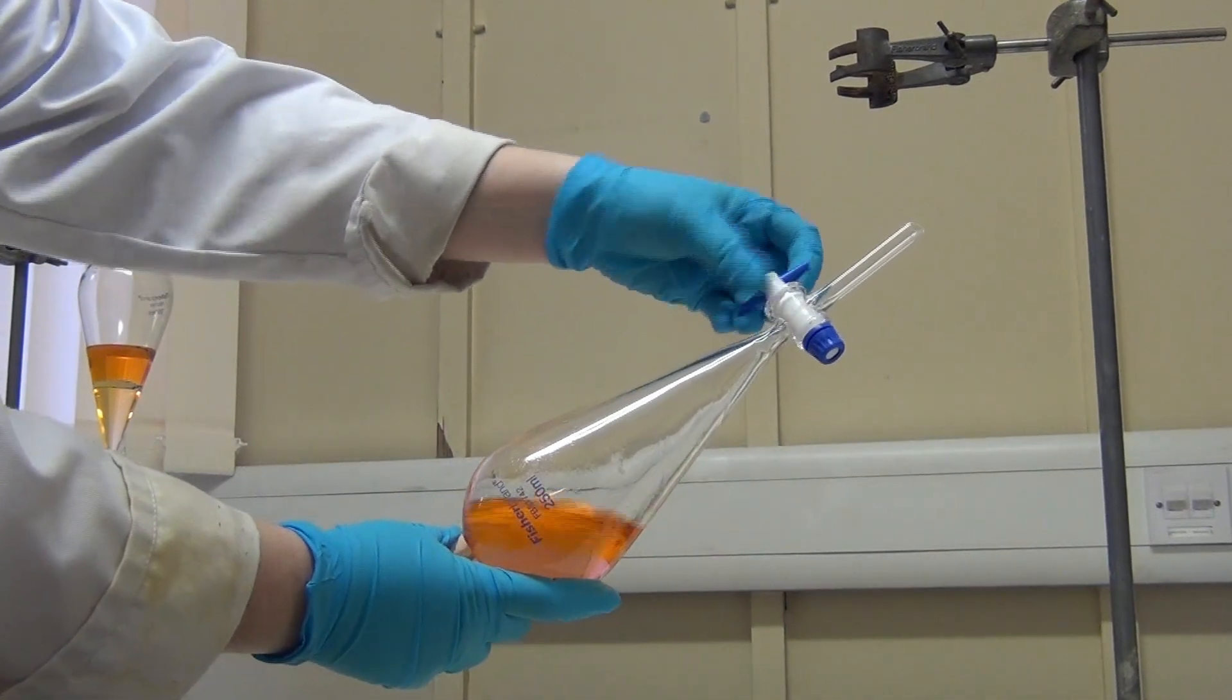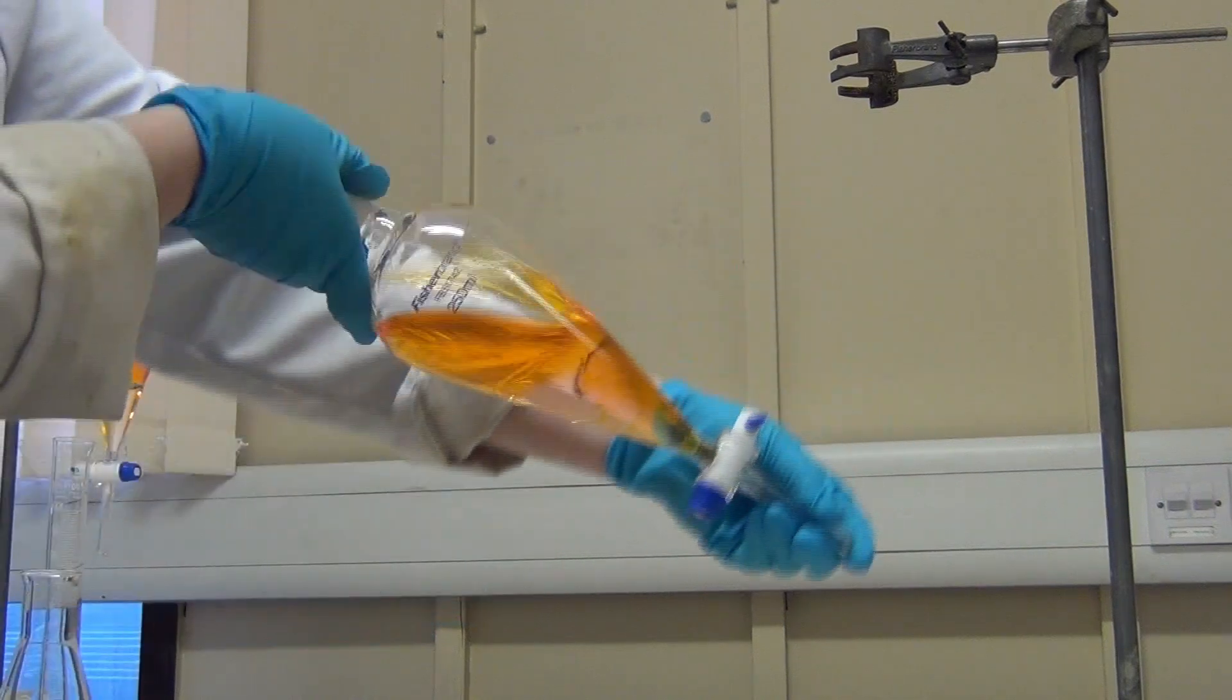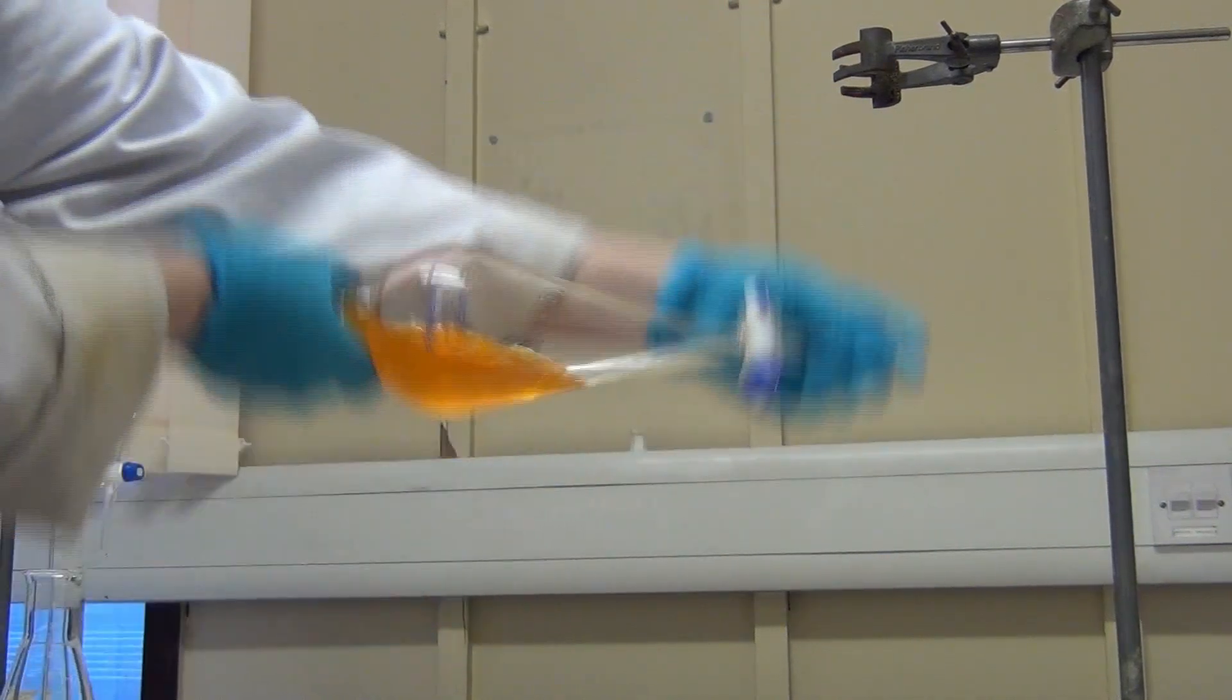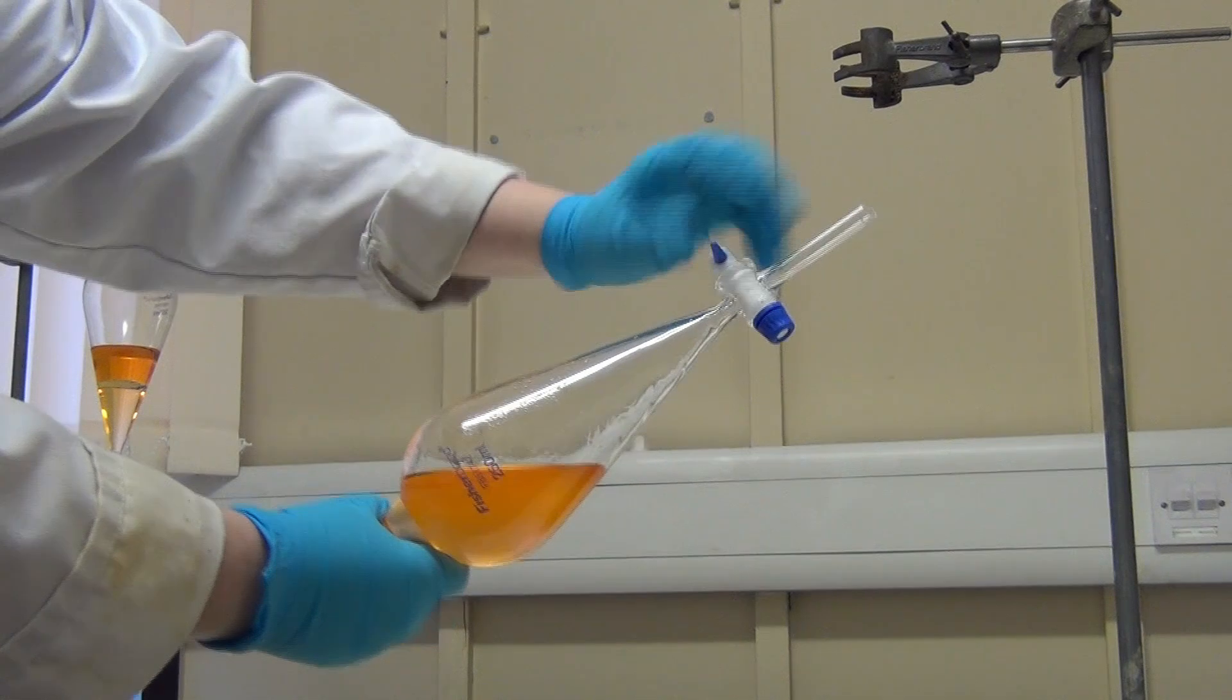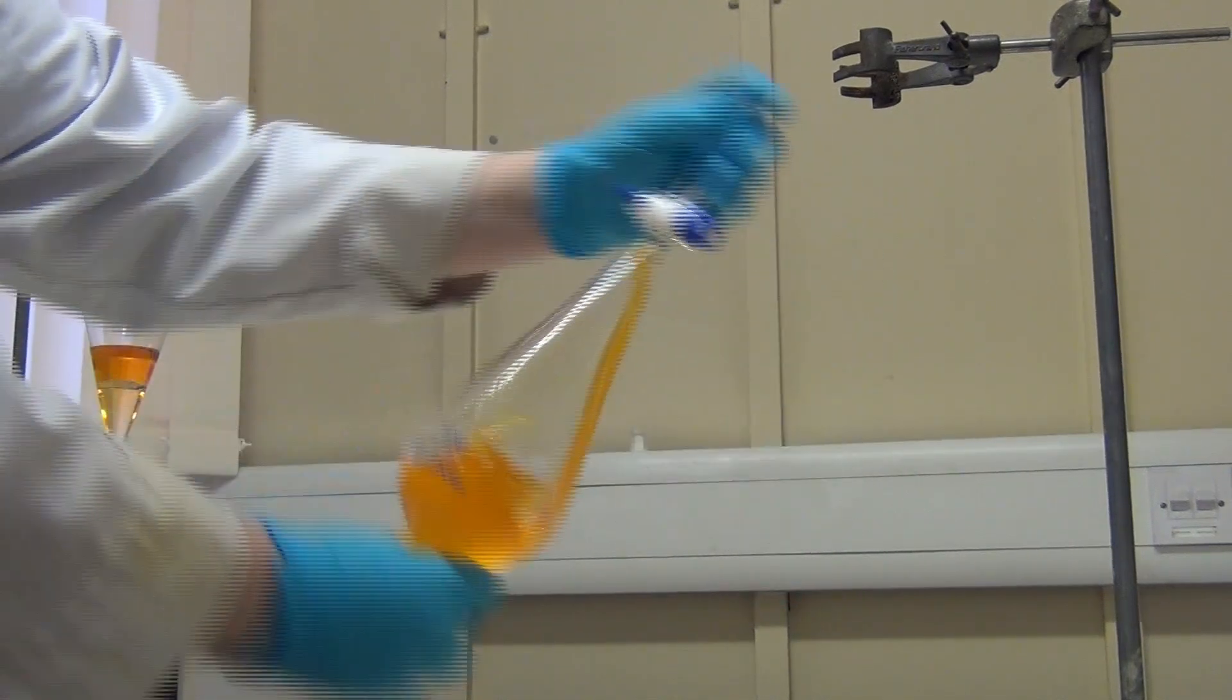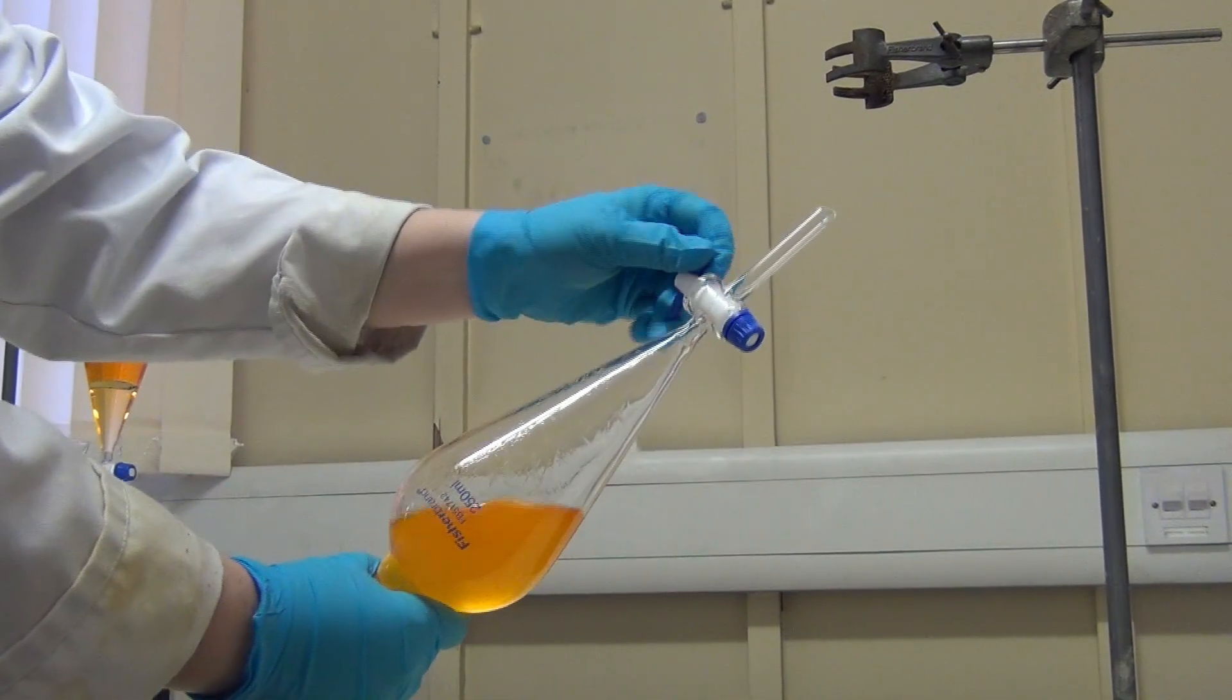To begin with, you should remove the funnel from the clamp or ring, holding it securely with both hands, and then turn the funnel upside down. When upside down, open the tap to release the pressure that may have built up during the mixing.